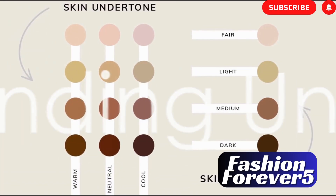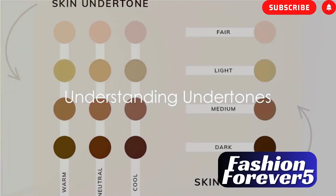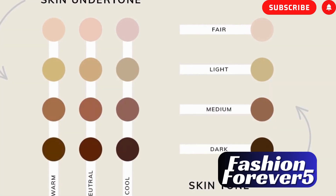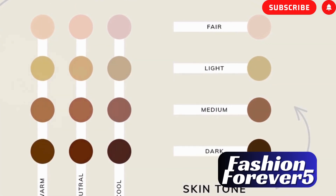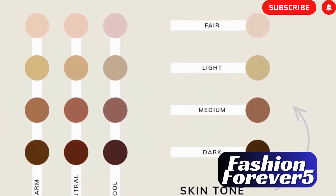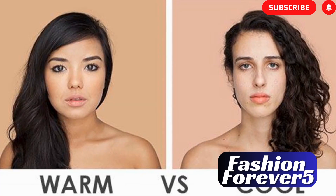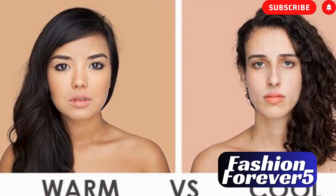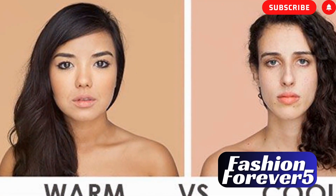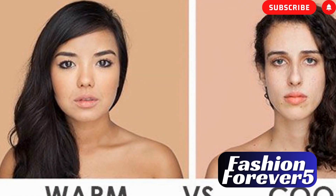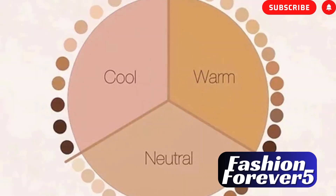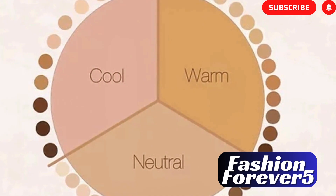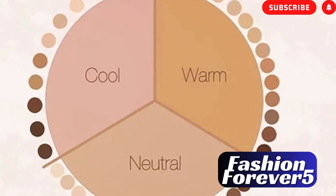Now let's talk about undertones. Undertones are the subtle hues underneath the surface of your skin that can be categorized as warm, cool, or neutral. Warm undertones have hints of yellow, peach, or golden hues, while cool undertones have pink, red, or blue undertones. Neutral undertones have a mix of both warm and cool tones.